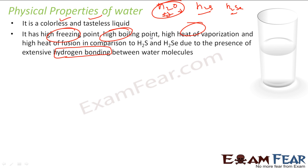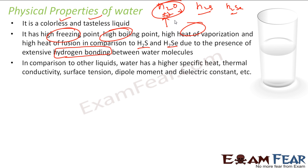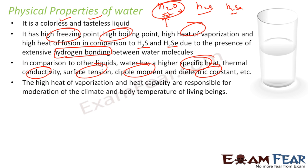So if you compare H2O with H2S or H2Se, which have a similar structure, H2O has higher boiling and melting point and higher heat of vaporization because of hydrogen bonding. It also has higher specific heat capacity, higher thermal conductivity, higher surface tension, higher dipole moment, and higher dielectric constant. We have studied all this in the past few slides.